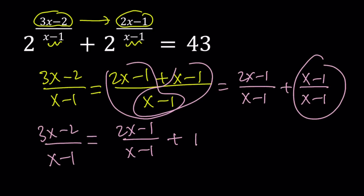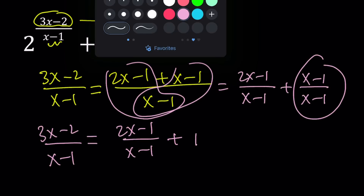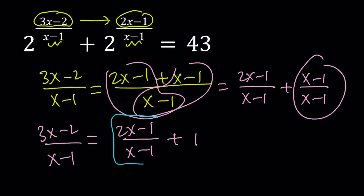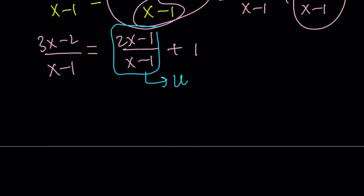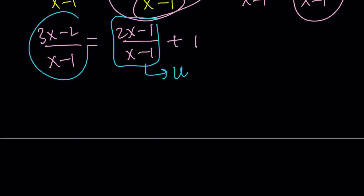One thing to be careful about here is x does not equal 1 — that's outside the domain. That's actually going to be our vertical asymptote, and we'll talk about that a little later. This helps us a great deal because we can use substitution. If I call u equal to (2x minus 1) over (x minus 1), then the other exponent becomes u plus 1.